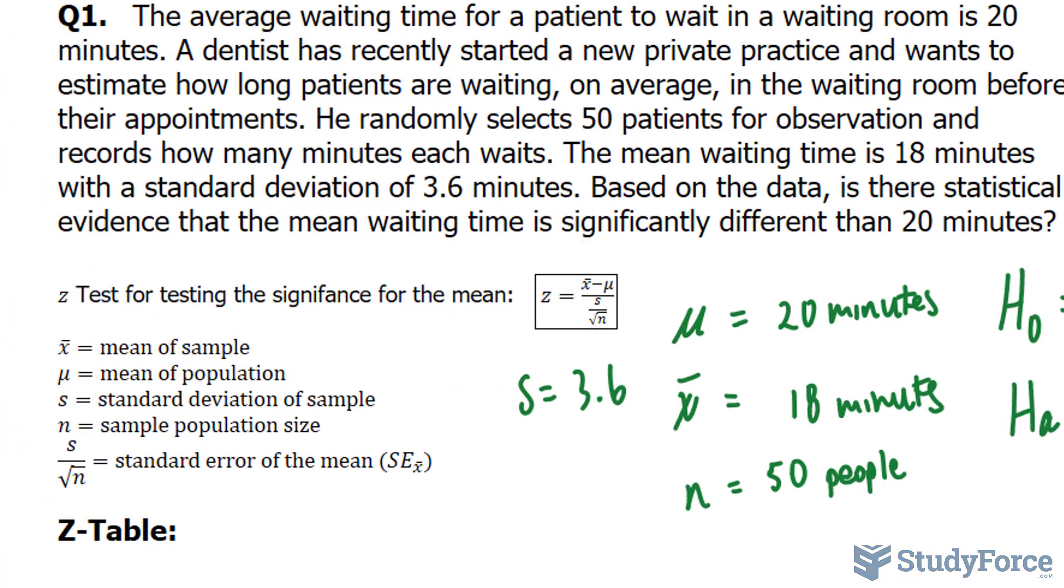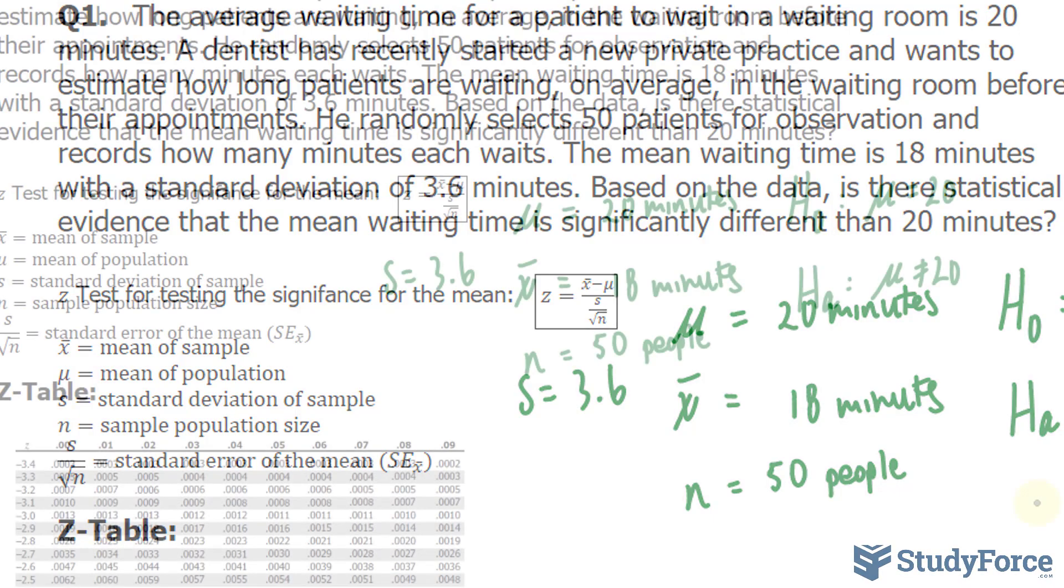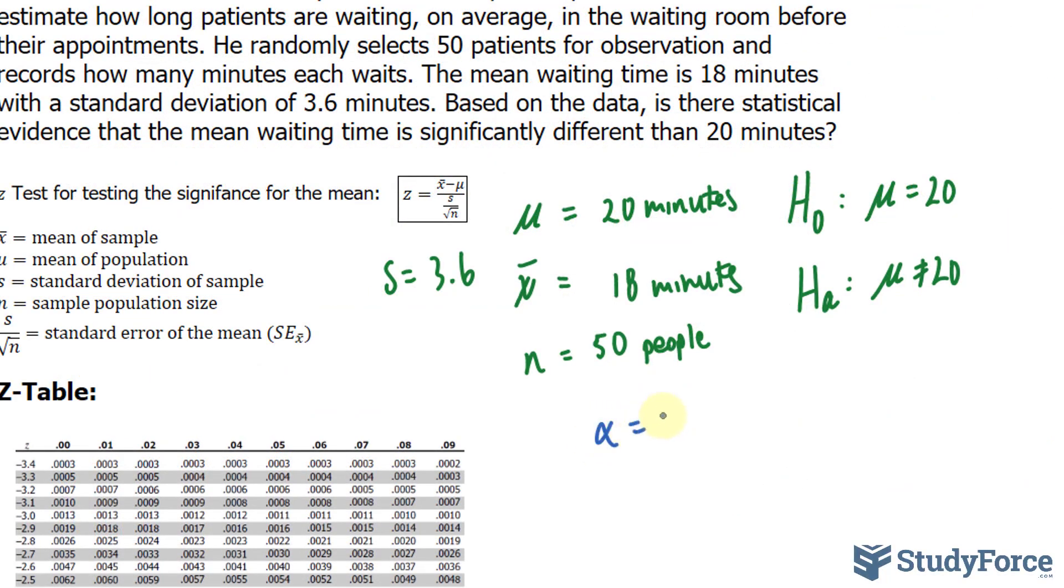Next, we need to determine the significance level, which we denote as α. They haven't given it to us in this question. So, if they don't give it to you, just use 0.05. I'll say α is 0.05.